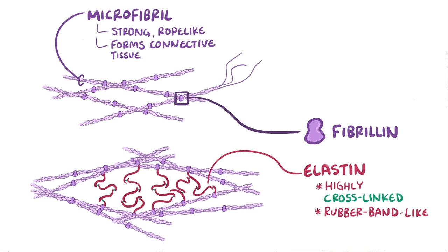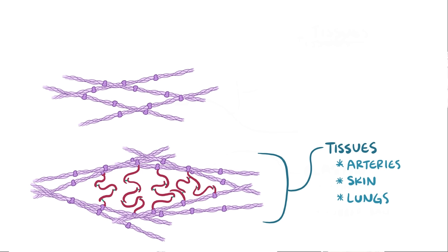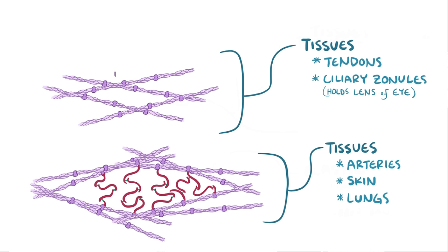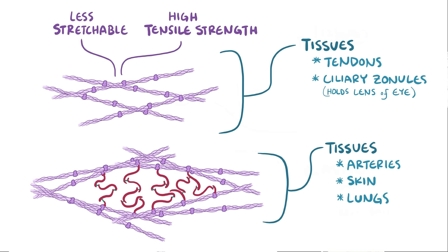Tissues that have elastin fibers are tissues like the arteries, skin, and the lungs. Tissues that have microfibrils but no overlying layer of elastin are like tendons and the ciliary zonules that hold the lens of the eye in place. These tissues are less stretchable, but still have considerable tensile strength.